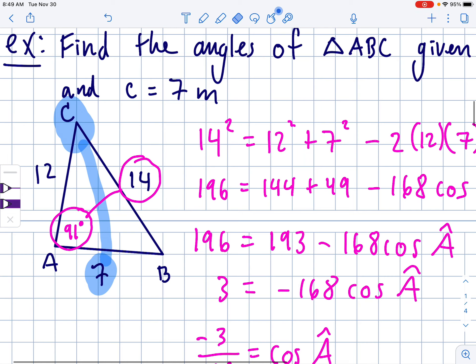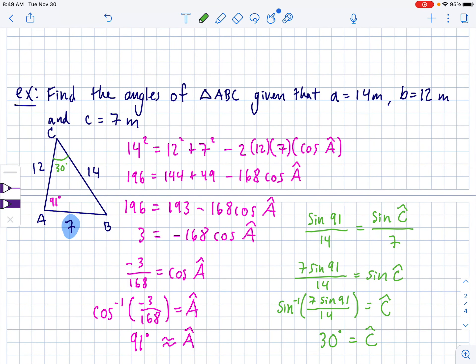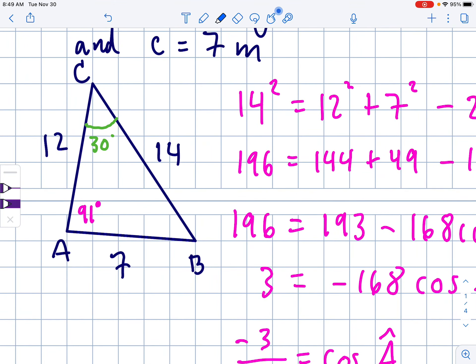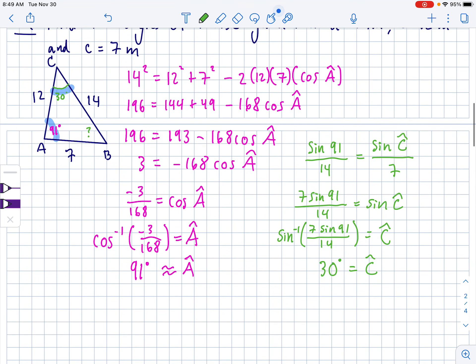Now, if I update my diagram, that means that we just found C, and this is 30 degrees. Now, we could use law of sines or law of cosines to find angle B, but once we have two angles in a triangle, so we know the 30, we know the 91, can't we find this guy just by subtracting from 180? I think so. So angle B is going to be equal to 180 minus 30 plus 91. That leaves us with 59. So here's our answers. A is 91, C is 30, B is 59.